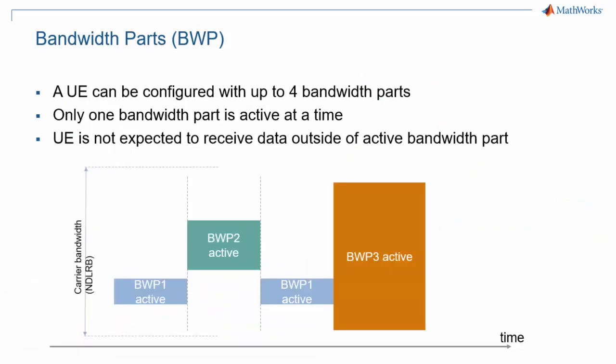One UE can be associated with up to four bandwidth parts, but only a single bandwidth part can be active at a time. Those bandwidth parts are pre-configured, and the UE can be instructed to switch between those different bandwidth parts over time. On this diagram, one can see the UE switching between bandwidth part 1 to 2, back to 1, and then to bandwidth part 3, which covers a larger bandwidth.